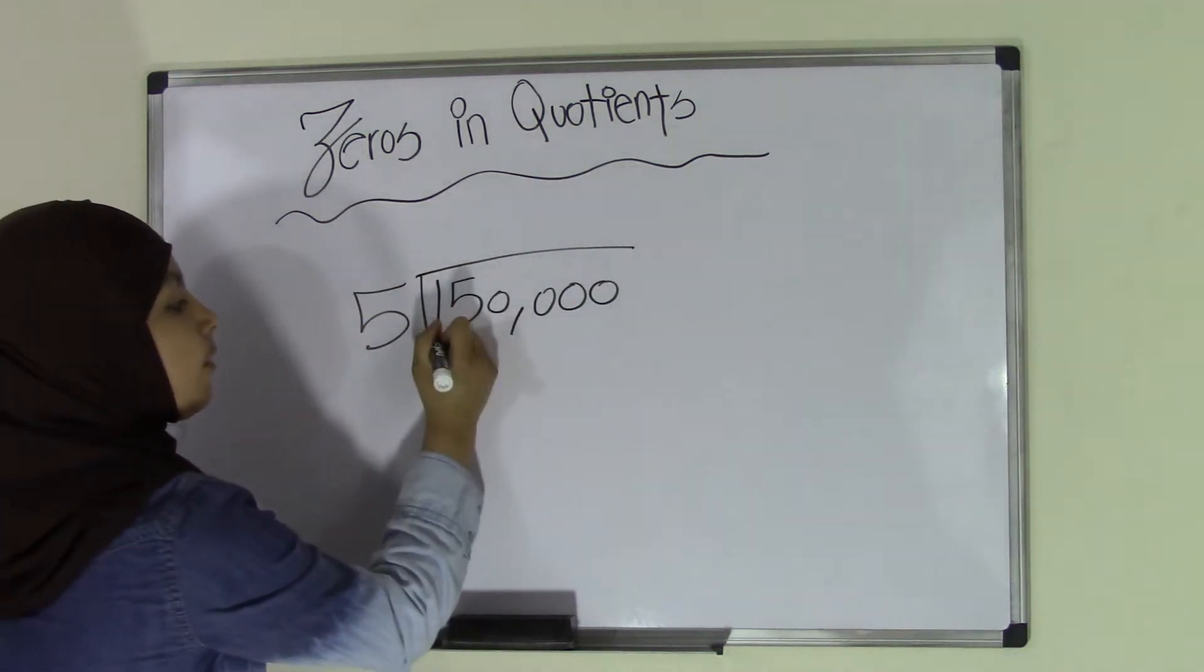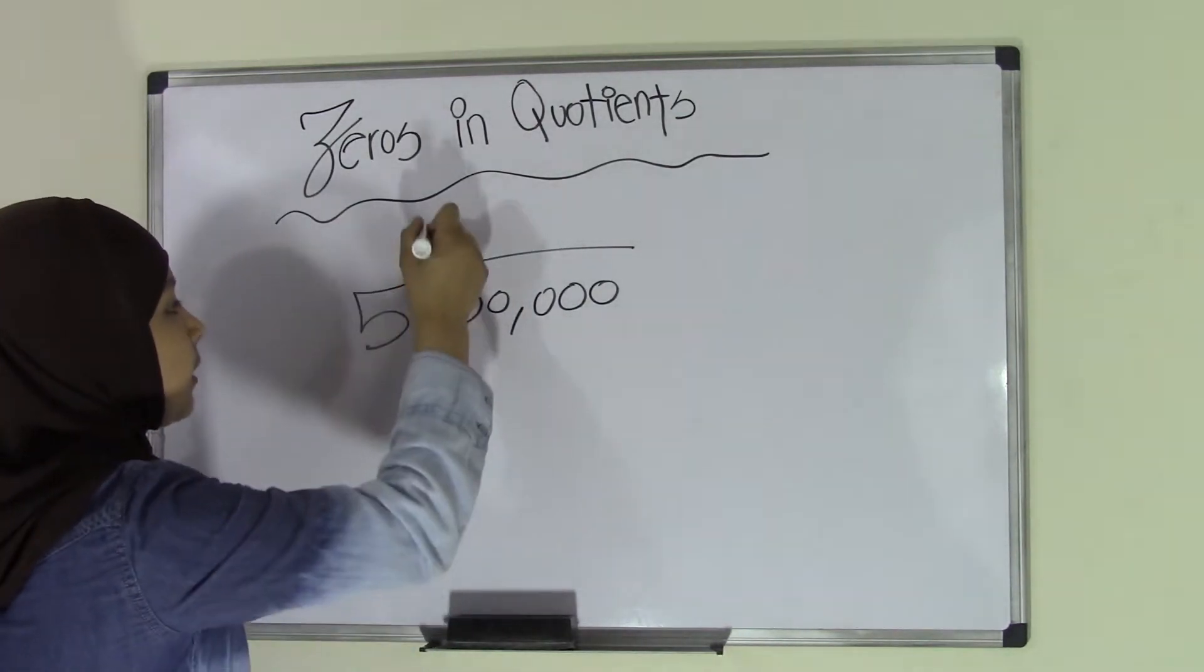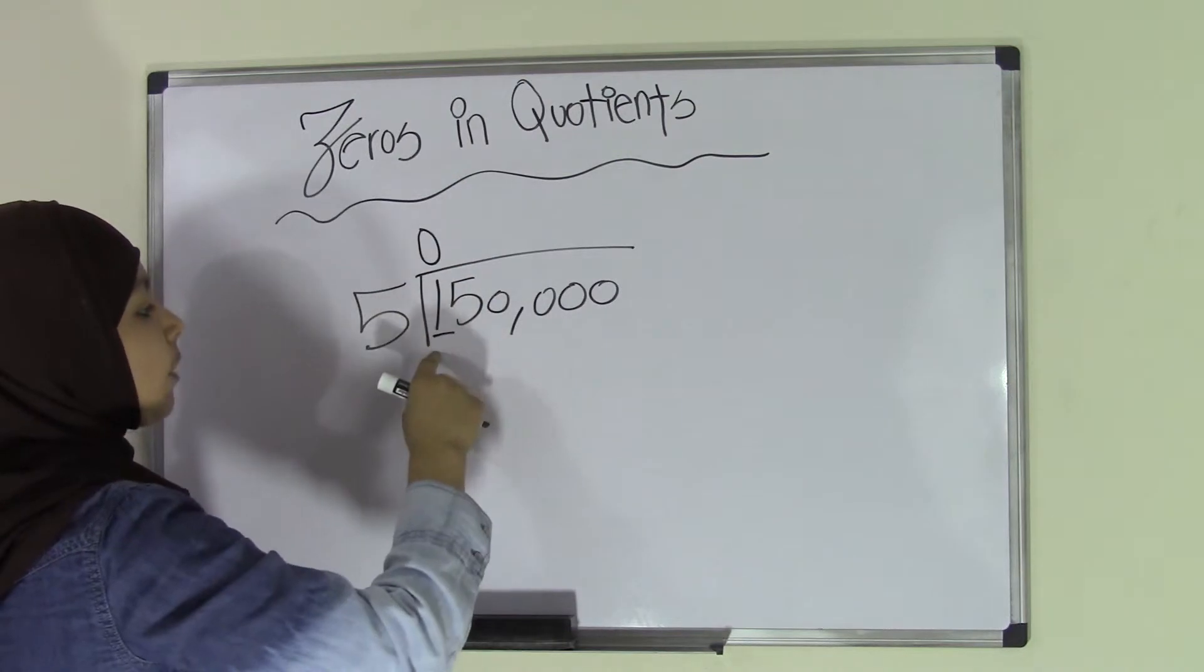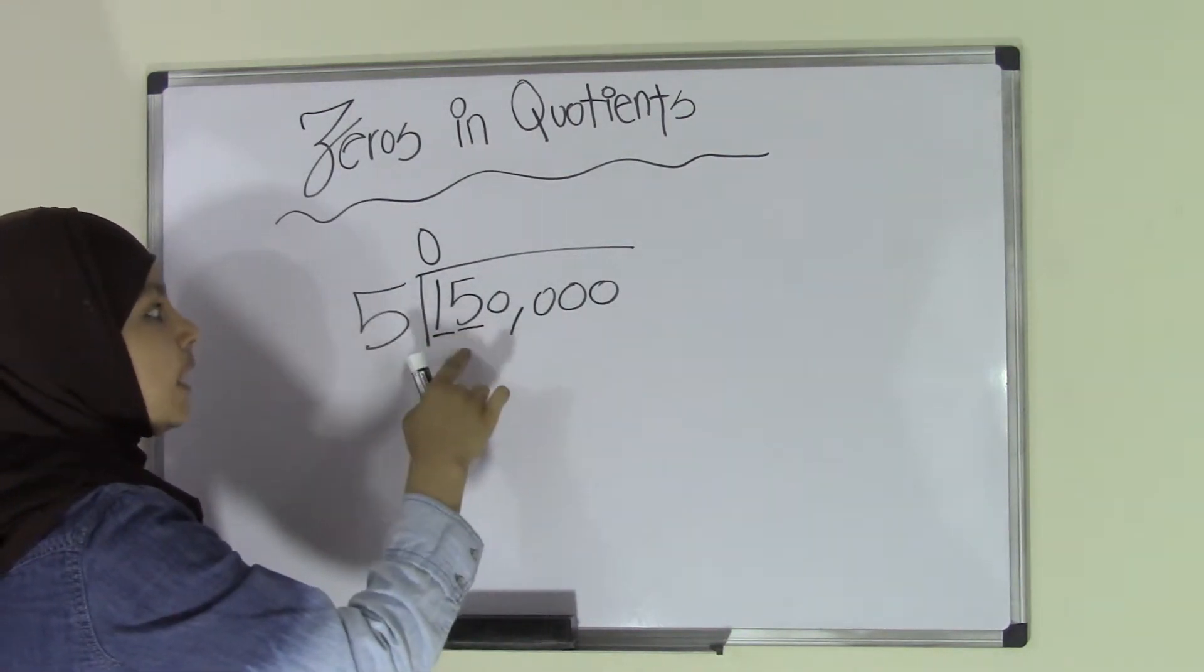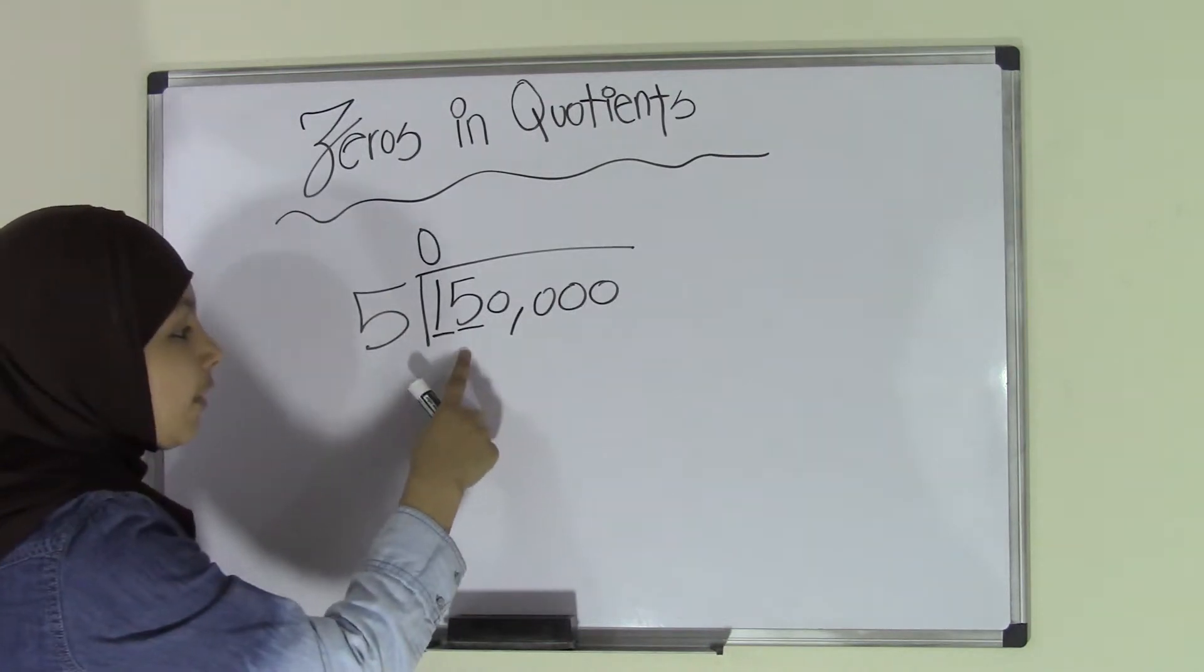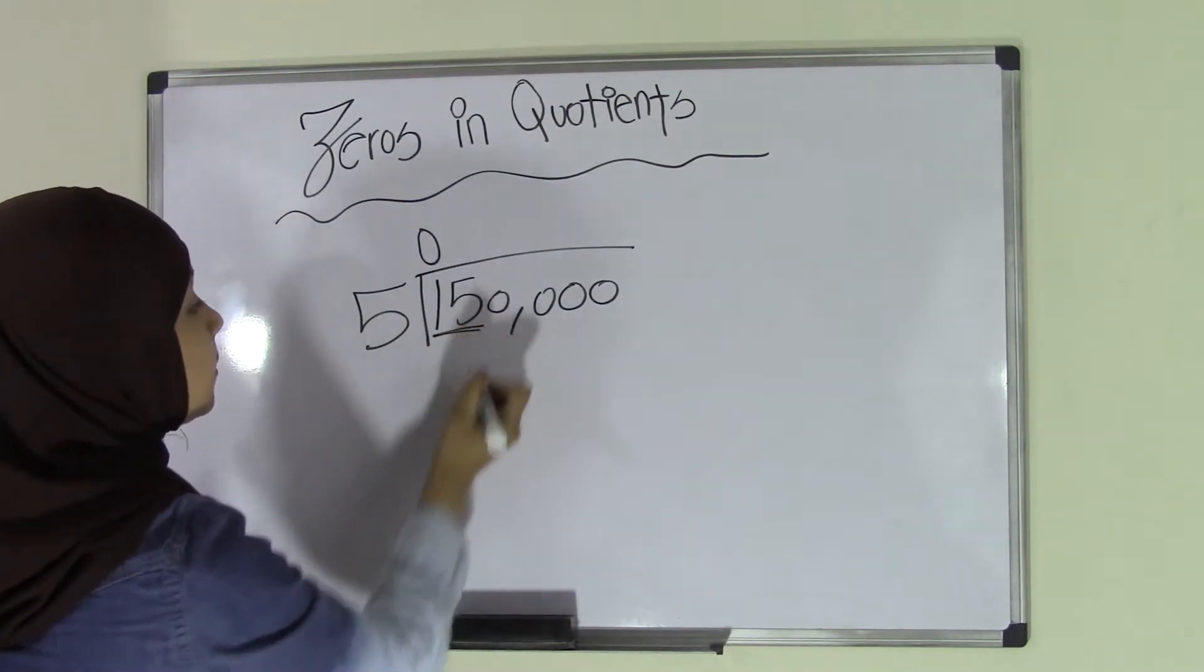So once again, first just look at the first number here, we're going to consider 1. We can't really do 1 divided by 5, right? So we're just going to put a 0 here, and then we're going to move on to the next digit. So 5 into 15. We're going to merge them together, so we just connect here. So now it just becomes 15.